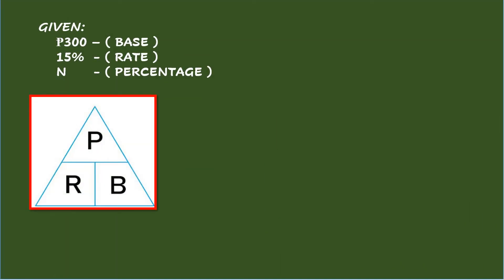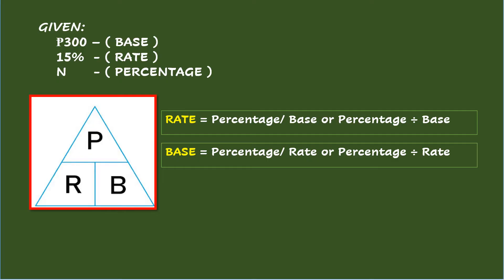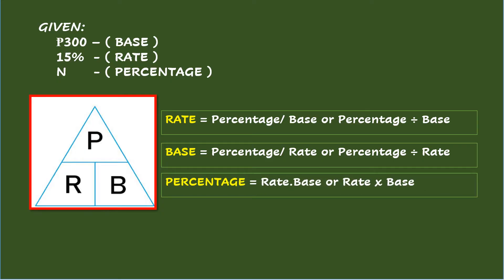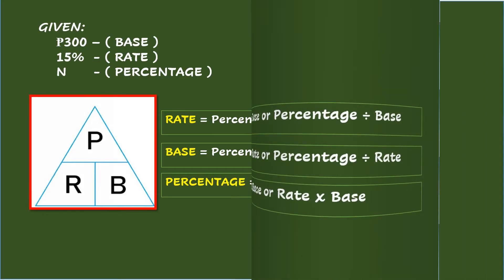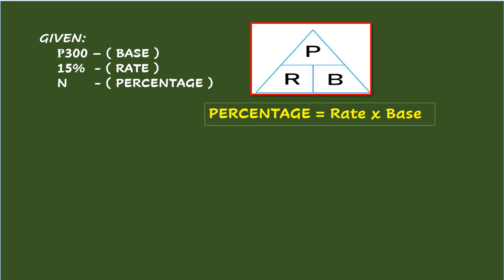The PRB triangle will help you remember and solve for the missing element. Take note of the letters representing the elements and their positions in the PRB triangle. P is above R and B, while R and B are beside each other. To find the rate, use rate equals percentage over base, or percentage divided by base. To find the percentage, use percentage equals rate times base, since rate and base are beside each other. Going back to the missing element, the formula would be percentage equals rate times base.